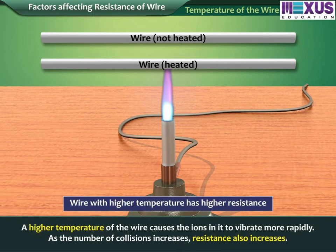Temperature of the wire. A higher temperature of the wire causes the ions in it to vibrate more rapidly. As the number of collisions increases, resistance also increases.